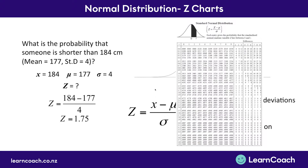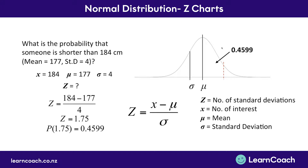Now that we know the z-score is 1.75, we can look it up on our z-chart to find our probability. We go down to 1.7 on the left-hand column, move across to column 5 up at the top, and find the number that fits with both of those, which is 0.4599. Now remember, this is a number from the center — we started at the center and went up to a z-score of 1.75. There's still the big 0.5 on the other side, since half the population is below the mean. That 0.4599 is between the mean and 184 cm. Therefore, the entire proportion of the population below 184 cm tall is 0.9599, or about 96%.